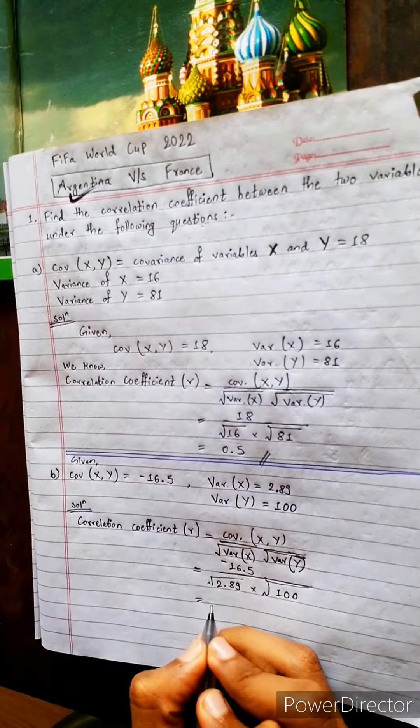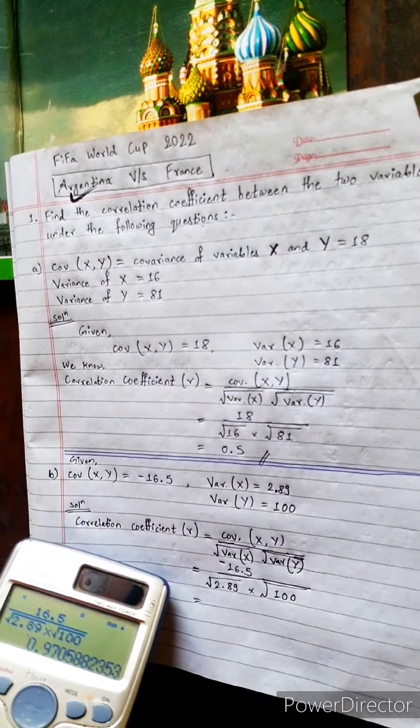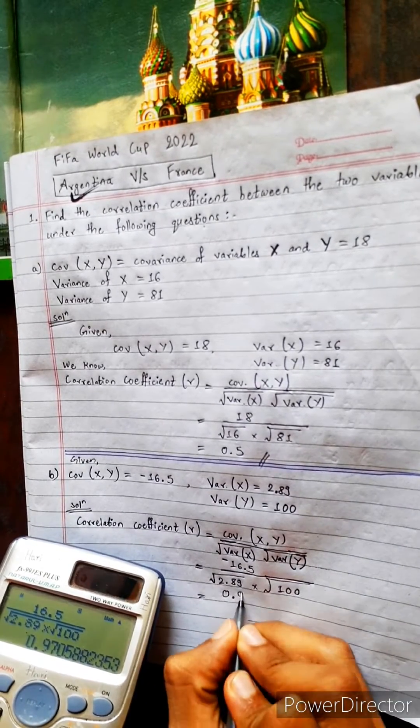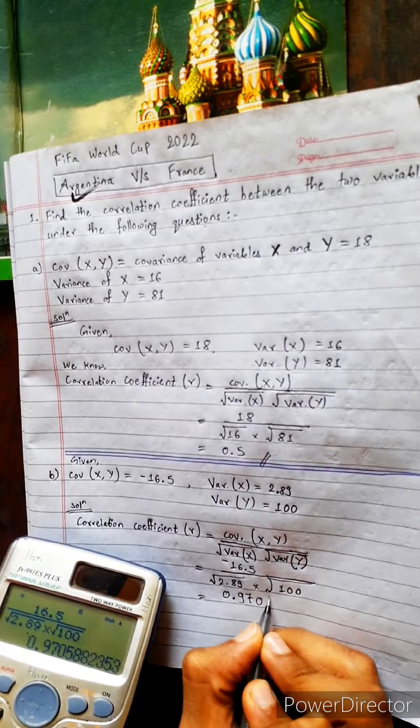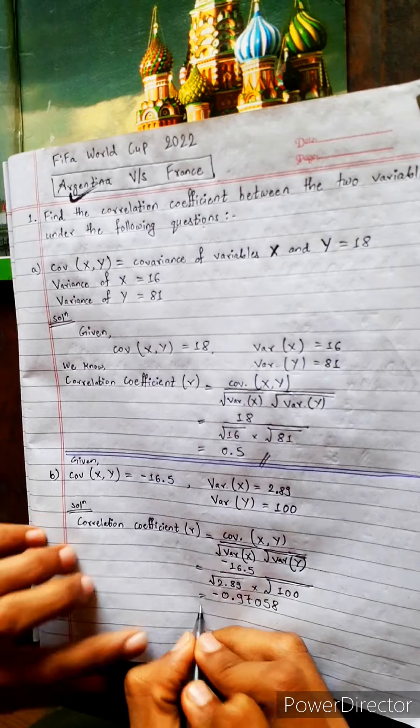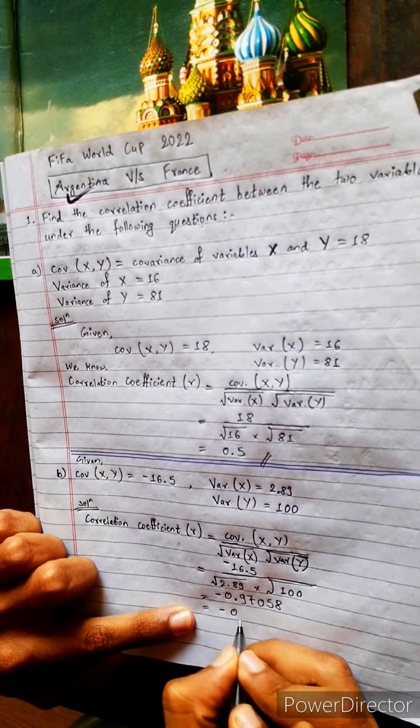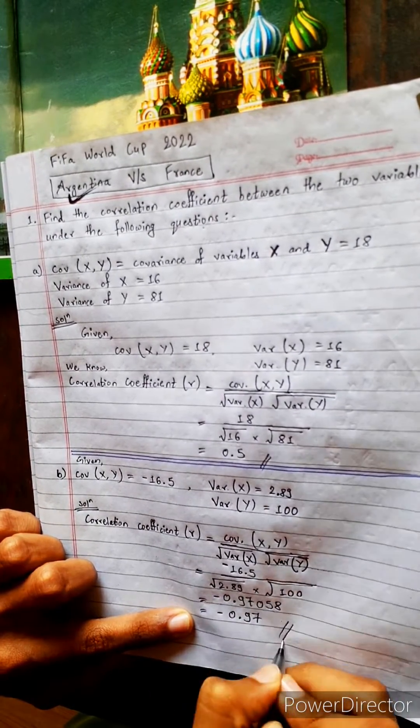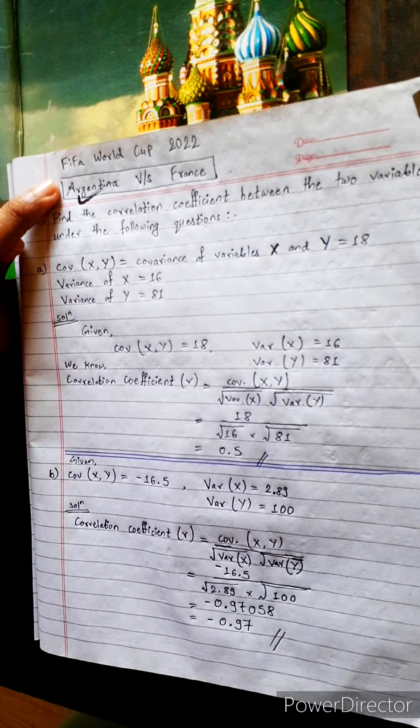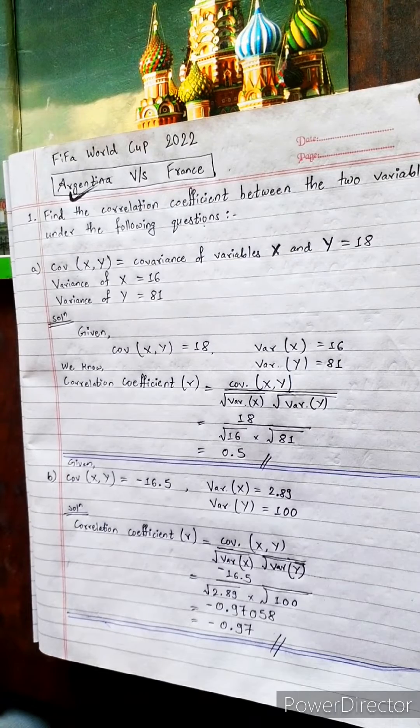Now let's use the calculator and save time. We got 0.97058. It is negative. Let's write it here. Now doing round off, we get minus 0.97, and this is the right answer. Now, turn for Lionel Messi. Be ready for the next version.